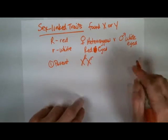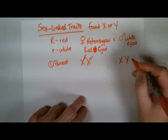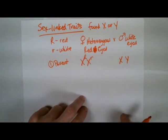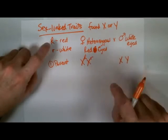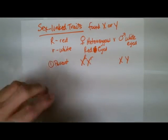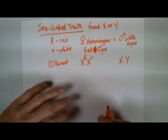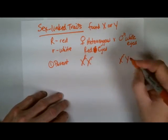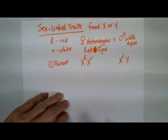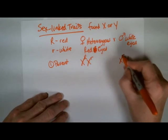Now for the male, the male's genotype is X and Y, and again I left a little gap here. It's white-eyed, so that means it's got the little r, but because it's sex-linked only found on the X chromosome, we're only going to have one allele. And that's going to be on this X chromosome.